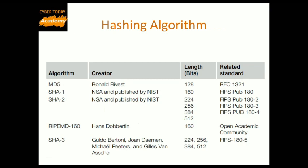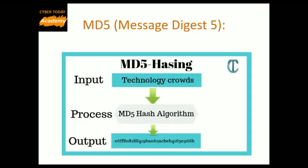Let's start with MD5, or Message Digest 5. The MD5 Message Digest algorithm is a cryptographically broken but still widely used hash function producing a 128-bit hash value. Although MD5 was initially designed to be used as a cryptographic hash function, it has been found to suffer from extensive vulnerabilities. It can still be used as a checksum to verify data integrity, but only against unintentional corruption. It remains suitable for other non-cryptographic purposes, for example for determining the partition for a particular key in a partitioned database.